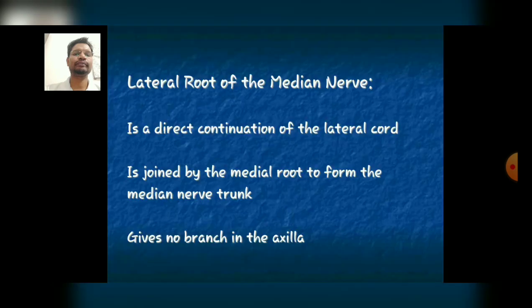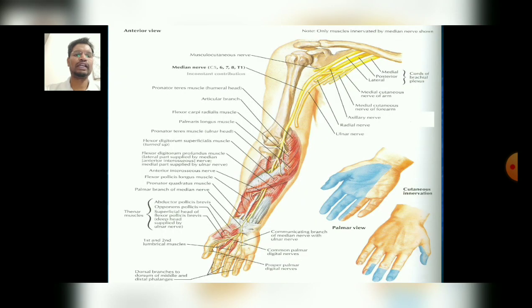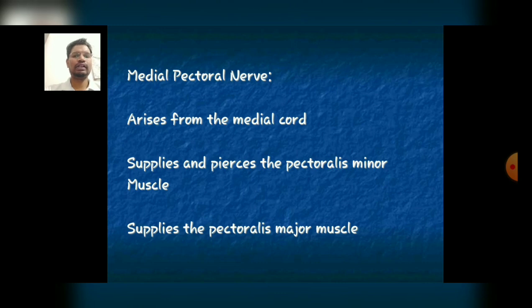The lateral root of the median nerve is a direct continuation of the lateral cord, and this lateral root is joined by the medial root to form the median nerve trunk. It gives no branches in the axilla, as well represented in the diagram.